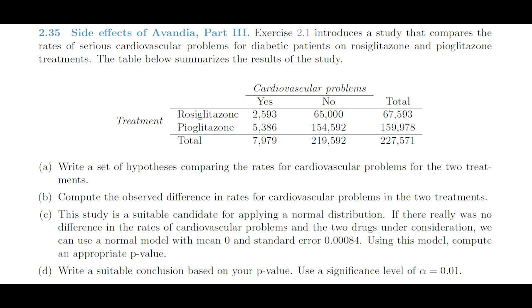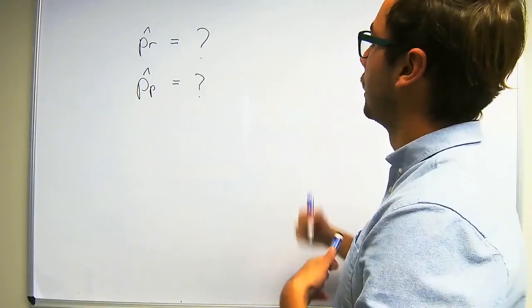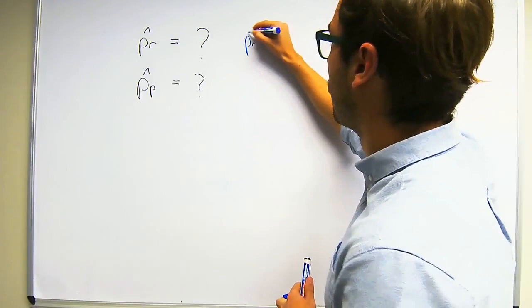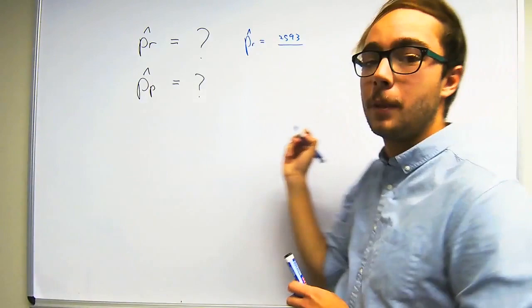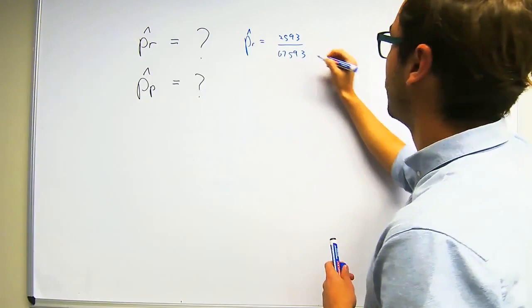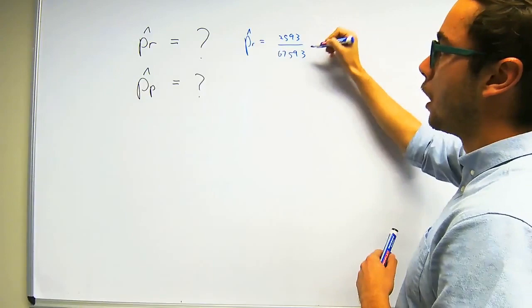Question B asks us to compute the observed difference in rates for cardiovascular problems in the two treatments. We basically have to calculate the proportion of people that took rosoglitazone that had cardiovascular disease and the proportion of people that took pioglitazone that had cardiovascular disease. This is relatively simple. PR observed is equal to 2,593 — we get these values from the table given in the question — over 67,593. This represents the people that took rosoglitazone and had cardiovascular disease over the total number of people that took rosoglitazone.